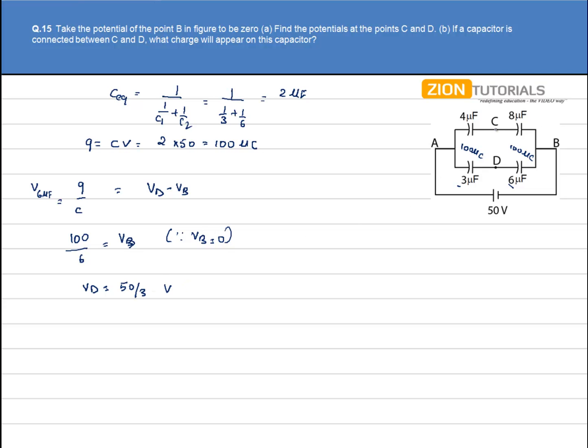In second case where we have to calculate the potential at point C, we have C equivalent given by 1 by 4 plus 1 by 8. It comes out to be 8 by 3uF.